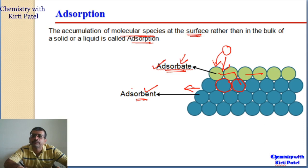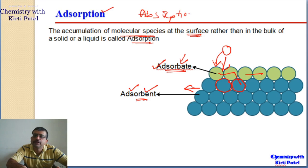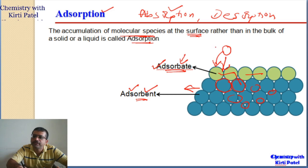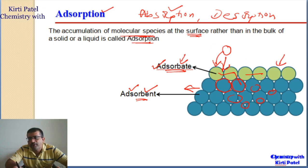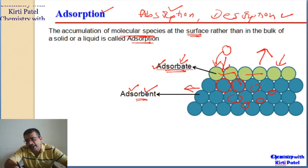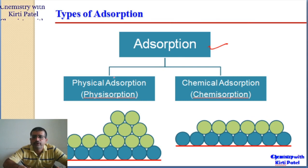We have two types of molecules: adsorbate and adsorbent. We also saw three types of processes: adsorption, absorption, and desorption. In absorption, molecules spread out uniformly inside the bulk, whereas in adsorption, molecules stick only to the surface. Desorption is the reverse process of adsorption, where an already stuck molecule goes back into the atmosphere.